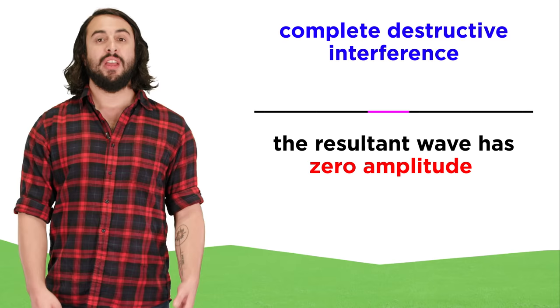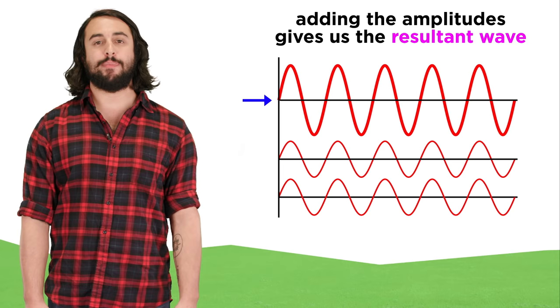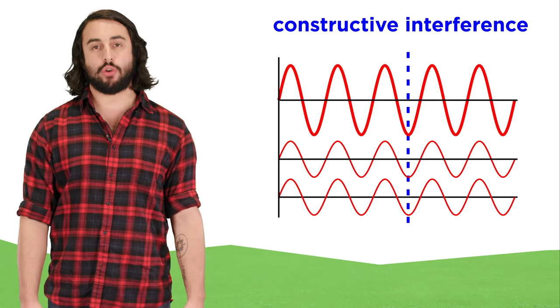This concept applies to periodic waves as well. First we can consider two sine waves that are precisely aligned. They are said to be exactly in phase. We can add the amplitudes at every single point and the result is a similar looking wave with twice the amplitude due to constructive interference, because the crests align with the crests and the troughs align with the troughs.